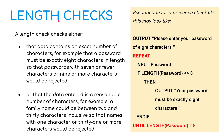A length check — the clue is in the name. The length check checks that the data contains the exact number of characters. For example, a password must be exactly eight characters in length, so passwords with seven or fewer, or nine or more characters, would be rejected. Or it might check that data is a reasonable number of characters — for example, a family name could be between two and 30 characters inclusive, so a name with one character or 31 characters would be rejected. The pseudocode uses a repeat loop: input the password; if the password length is not eight, output 'Your password must be exactly eight characters,' until the password length equals eight.